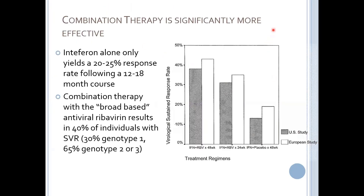A second drug was introduced: ribavirin. This combination therapy was shown to be significantly more effective. Interferon alone only yielded a 20 to 25 percent response in people getting treatment for 12 to 18 months — and again, this is no fun to get because it basically gives you a fever and makes you feel really, really sick. But combination therapy with ribavirin resulted in 40 percent of individuals achieving a sustained virological response, up to 65 percent in the more treatable genotypes.